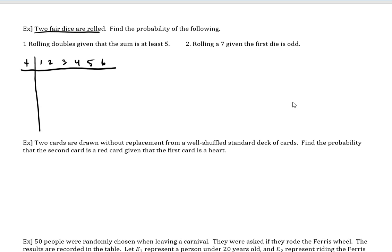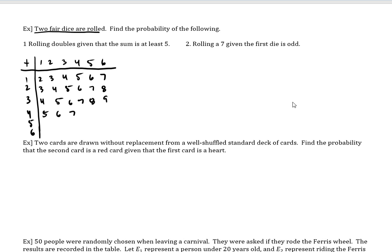So I'm listing the outcomes: die one goes 1, 2, 3, 4, 5, 6 and die two goes 1, 2, 3, 4, 5, 6. Then we add them — that's why I put the little plus there. The sums go: 2, 3, 4, 5, 6, 7 / 3, 4, 5, 6, 7, 8 / 4, 5, 6, 7, 8, 9 / 5, 6, 7, 8, 9, 10 / 6, 7, 8, 9, 10, 11 / 7, 8, 9, 10, 11, 12. So there's the sample space — 36 outcomes total.